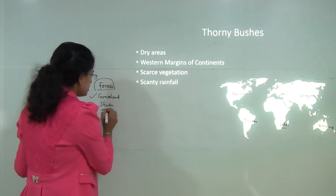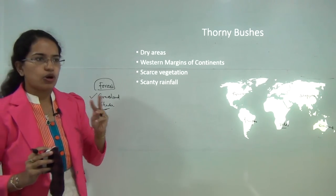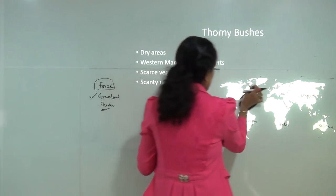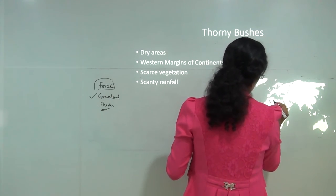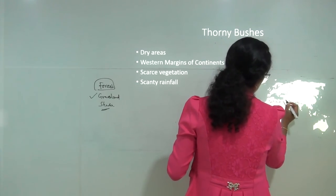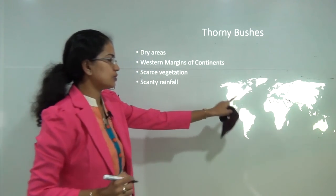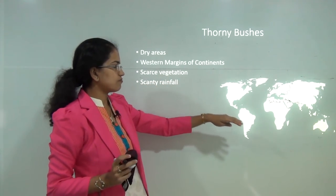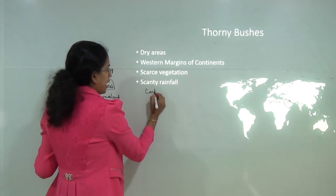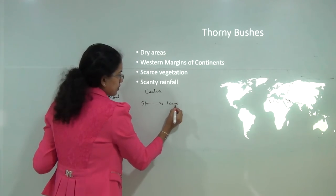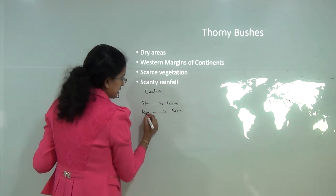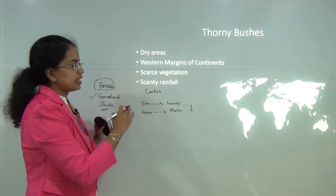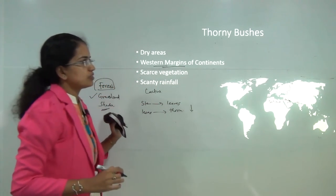Moving to the next category — shrubs. These can be thorny shrubs that occur in dry or arid areas. Examples include the Sahara desert, the Thar desert in India, and the Arabian desert. These areas have scarce vegetation and very little rainfall. Most trees occur in the form of cacti, where the stem is modified to store water and leaves are modified into thorns — this adaptation reduces the process of transpiration and water loss. Thorny shrubs usually occur on the western margins of continents.